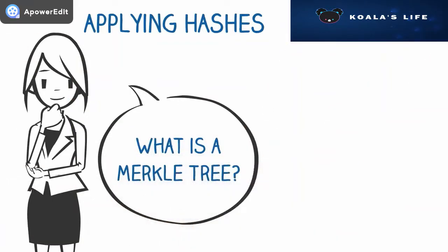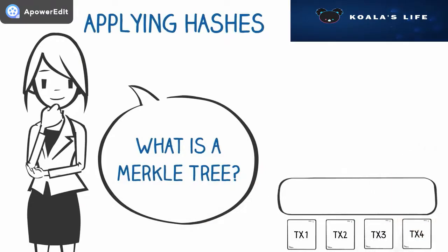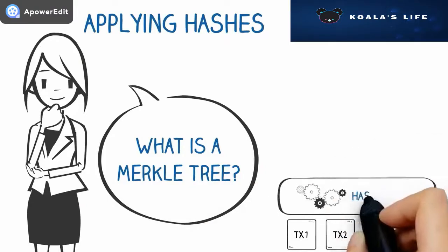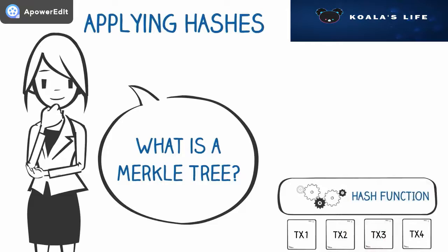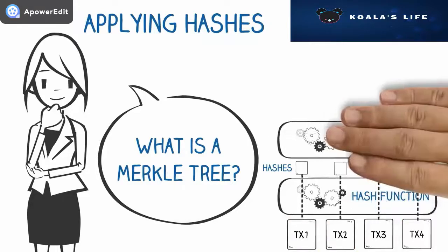Merkle trees are an essential part of a blockchain for data integrity. Each block in the blockchain can contain multiple transactions, which each contain data. In this example, there are four transactions: TX1, 2, 3 and 4. Each of the four transactions' data is passed through a hash function, generating four unique hashes, one for each transaction.